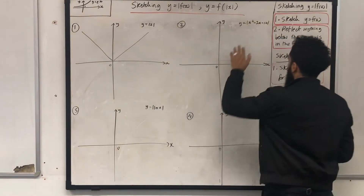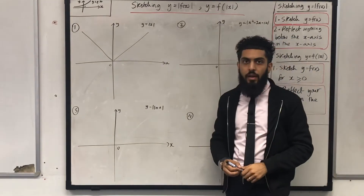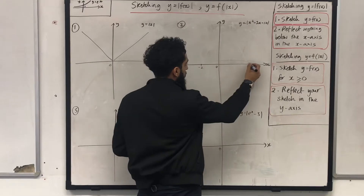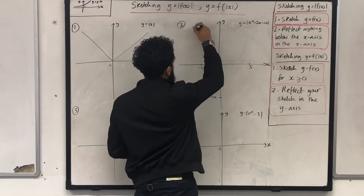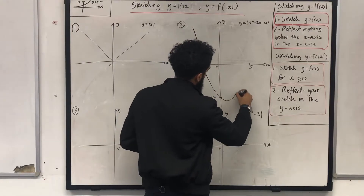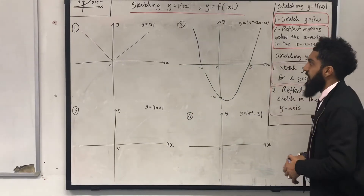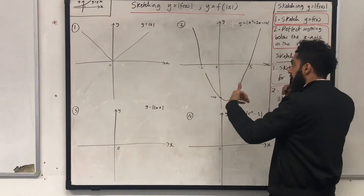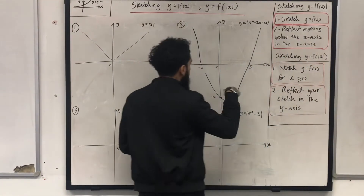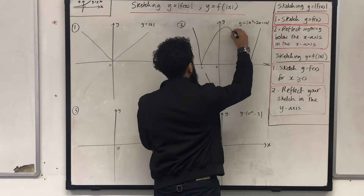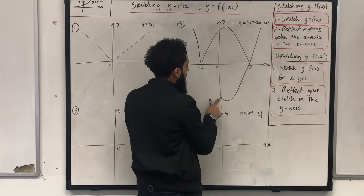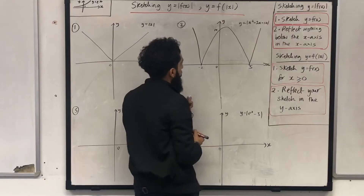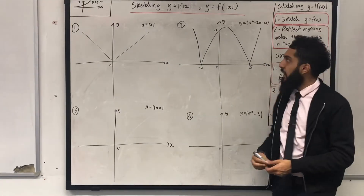Second one: I want to sketch y equal to the modulus of x squared minus 3x minus 10. I'll first sketch y equal x squared minus 3x minus 10. The x-intercepts are minus 2 and 5, the y-intercept is minus 10. It's a positive quadratic with a u-shape. Anything below the x-axis is reflected in the x-axis, so that part gets reflected to give a new curve. The new y-intercept is 10. That is the graph of y equal to the modulus of x squared minus 3x minus 10.